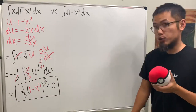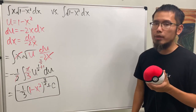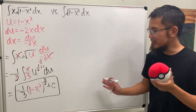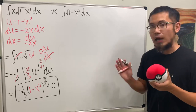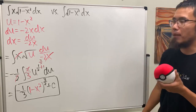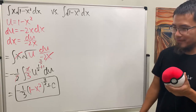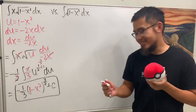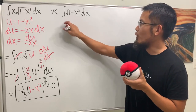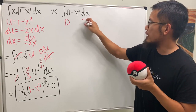For the second one, it is trickier. You can use what's called trig substitution, but in this video I will demonstrate how to do this with integration by parts. I'm going to use the DI setup, so let's put down the D and also the I columns.